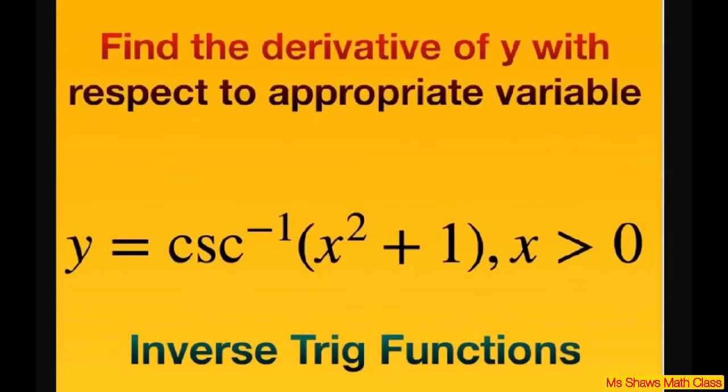Hey everyone, we're going to find the derivative of y with respect to x, y equals inverse cosecant of x squared plus 1 and our x has to be positive.